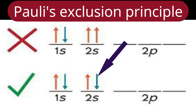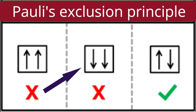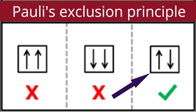Consider helium with the 1s orbital and 2 electrons. If both electrons have the same spin (both clockwise), it is not allowed. If both have the same spin but reversed (both anticlockwise), that is also not allowed. The only allowed case is one electron with spin plus half and the other with spin minus half, in order to distinguish their addresses — because quantum numbers are the address of the electron.